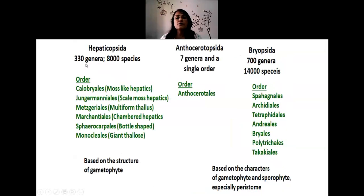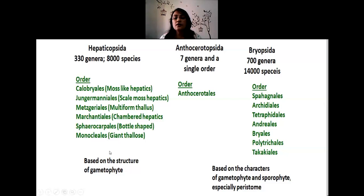Hepaticopsida includes around 330 genera and about 8,000 species, with further orders: Calobryales — moss-like hepatics; Jungermanniales — scaly moss-like hepatics; Metzgeriales — multi-formed thallus; Marchantiales — chambered hepatic members; Sphaerocarpales — body-shaped hepatics; and Monocleales — members with giant thallus. Classification here is based on the structure of the gametophyte. Anthocerotopsida has only one order, Anthocerotales, with seven genera, of which Anthoceros and Notothylas are the two major forms.